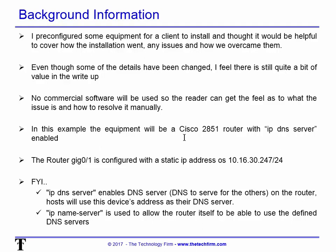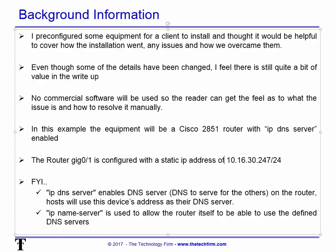In this example, the equipment is a Cisco 2851, and we're using the IP DNS server feature, which basically turns it into a DNS proxy. There's a little confusion between 'IP DNS server' and 'IP name server.' IP DNS server, as I said, turns this device into a DNS proxy.